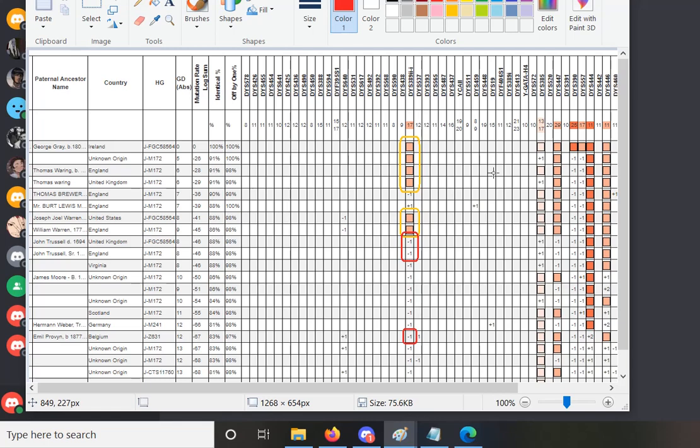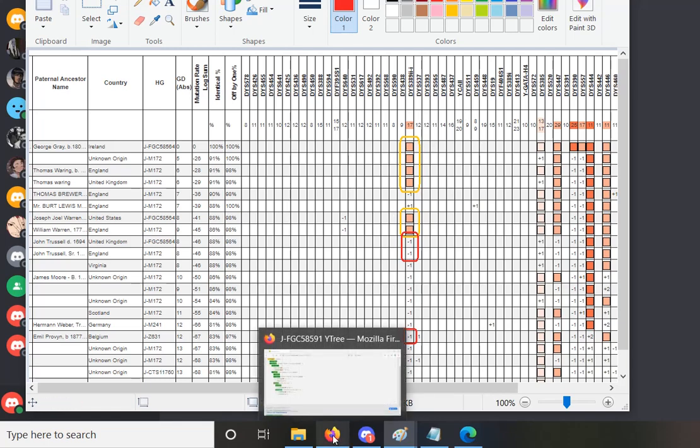What I've done is I've shown Emil Proven. I don't have the rare allele that they have. The Trussells don't have the rare allele that they have. I circled us in red. The guys that have the rare allele are Warings and Gray and some other surnames.